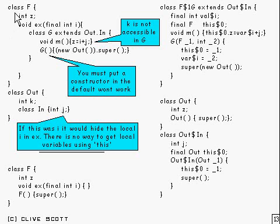This example here illustrates local variables and hiding and things like that for local classes. And what we've got here is this class F, and inside it is this method EX, and inside here is this local class G,